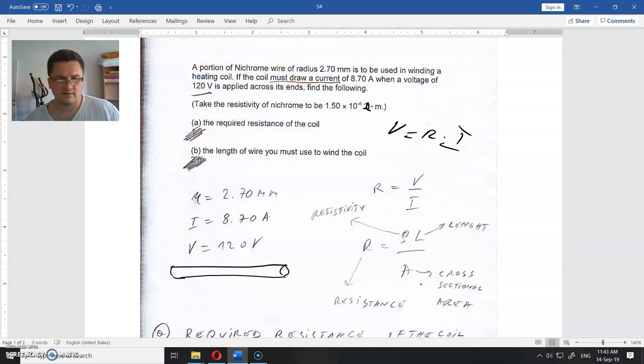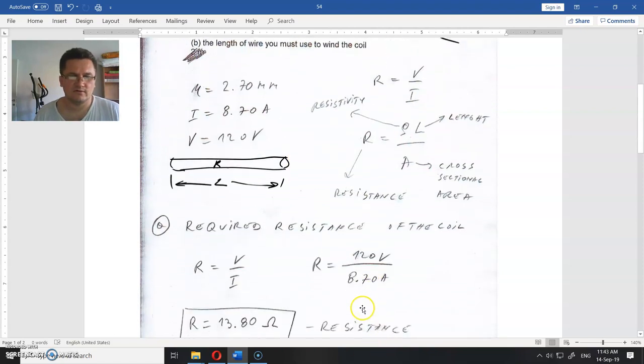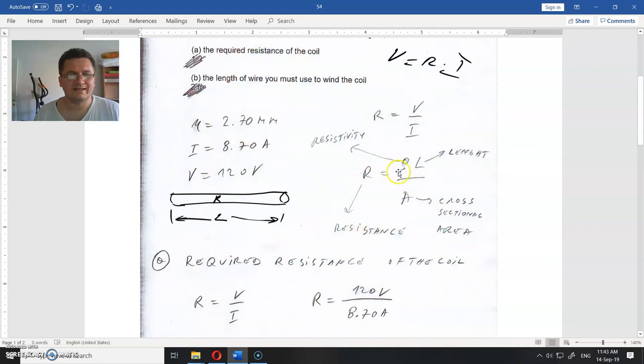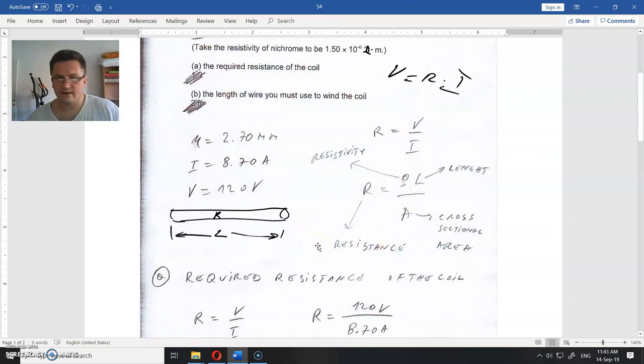Let's say this from here to here is length L. What is this magnitude? R is resistance, which we just calculated to be 13.8 ohms. So we know this. And this is the cross-sectional area. This area here we don't know,